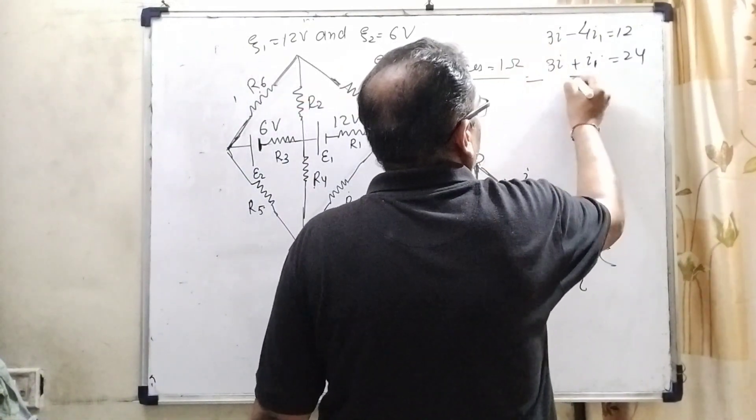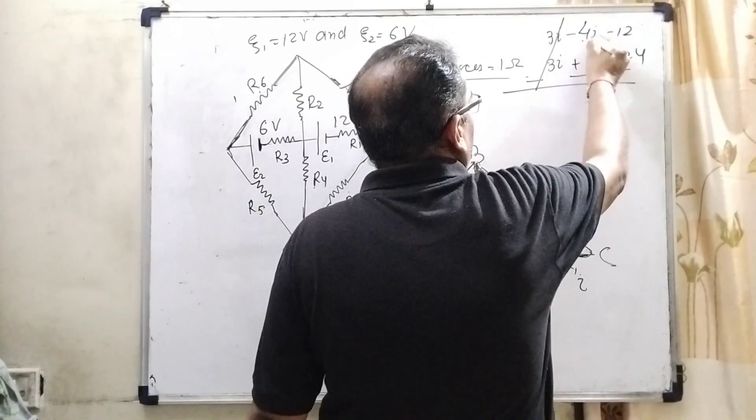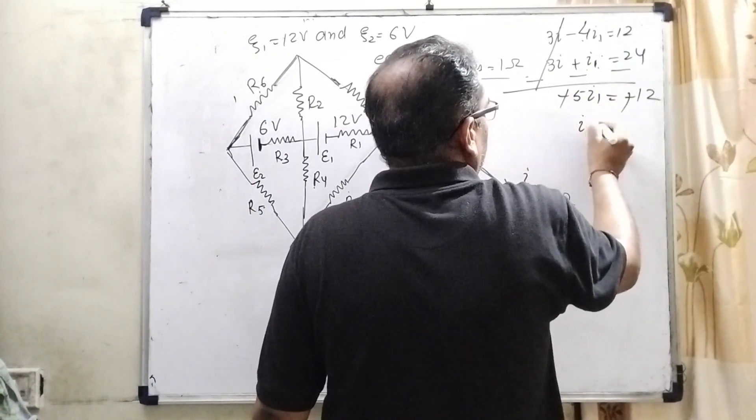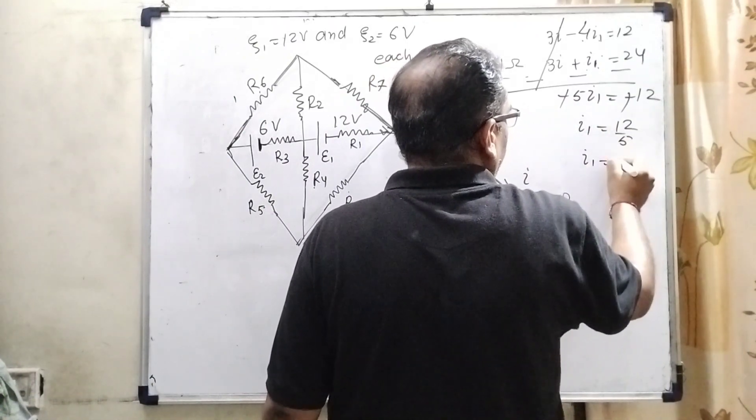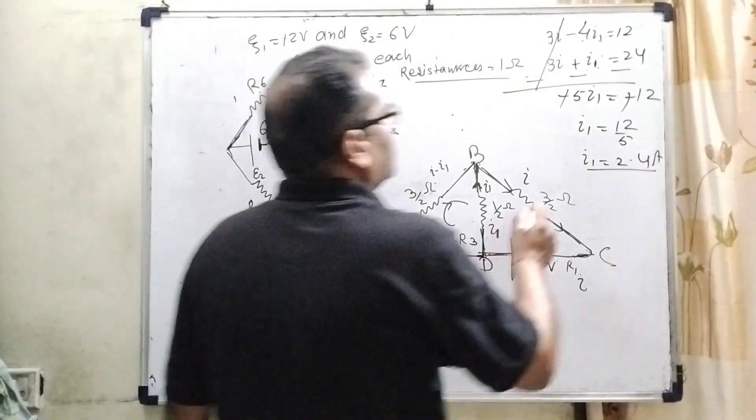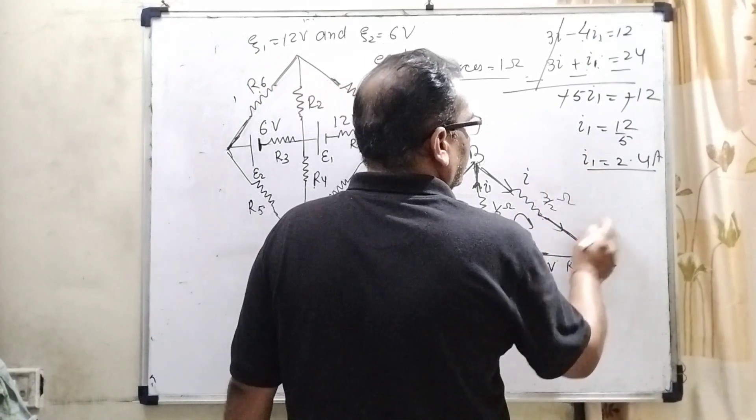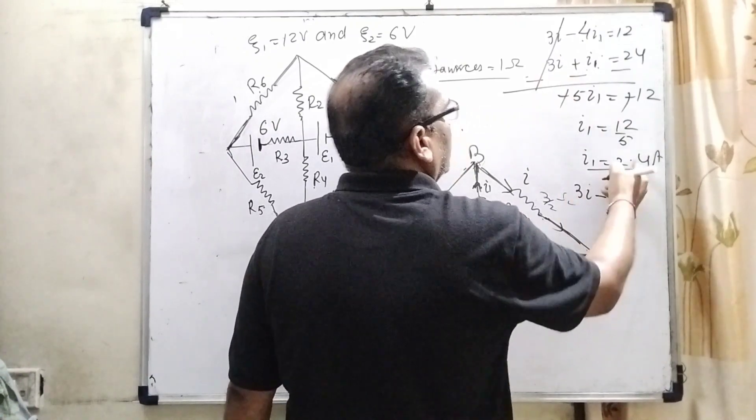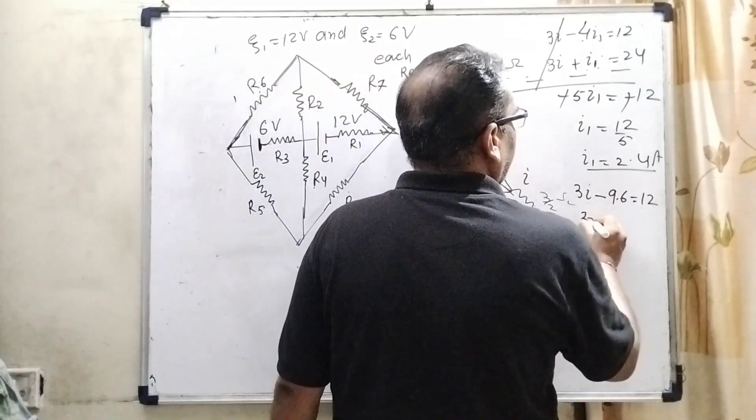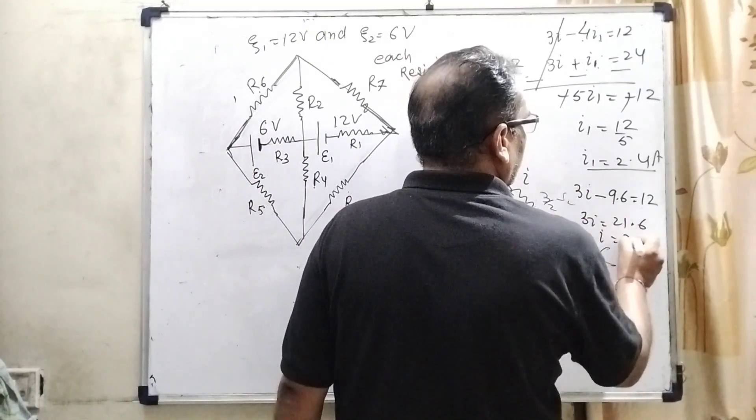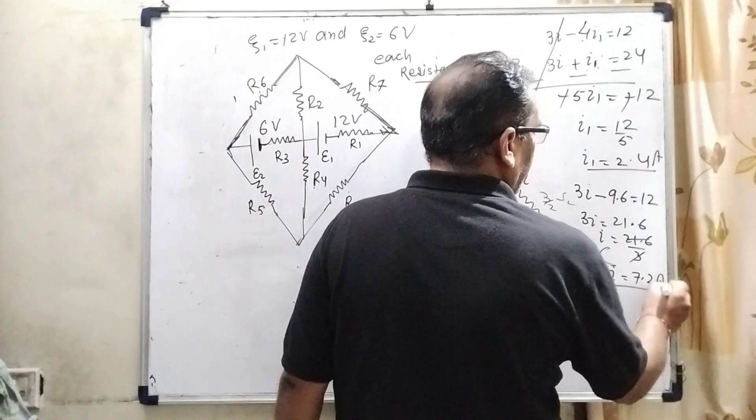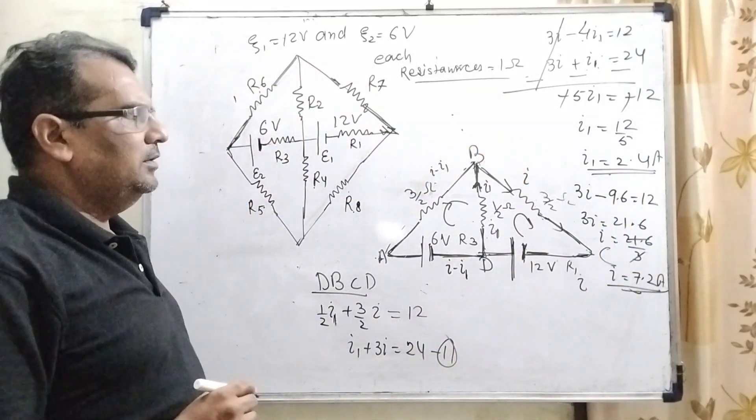Now, solving by subtracting the first and second equations: 3I minus 3I cancels out, minus 4I1 minus I1 becomes minus 5I1, and it equals minus 12. So I1 equals 12/5, which equals 2.4 amperes. Now substitute this value: 3I minus 4 times 2.4 equals 12, so 3I minus 9.6 equals 12, thus 3I equals 21.6, and I equals 21.6 divided by 3, which equals 7.2 amperes. So here we get I1 and I.